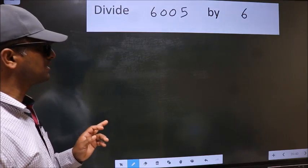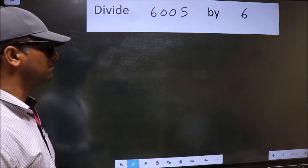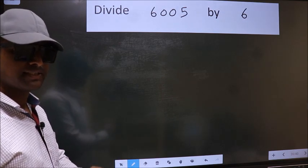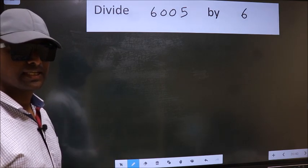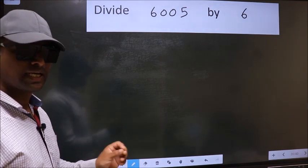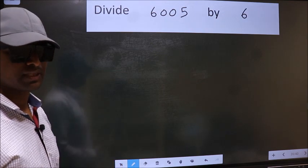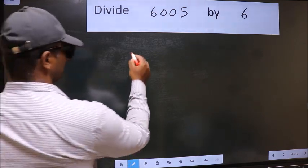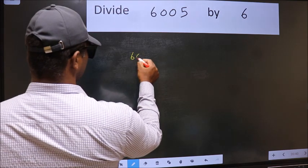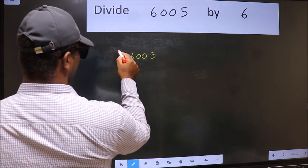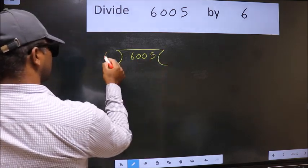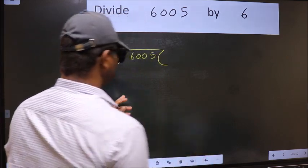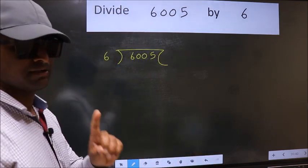Divide 6005 by 6. While doing this division, many do this mistake. What is the mistake that they do? I will let you know. But before that, we should frame it in this way. 6005 and 6 here. This is your step 1.